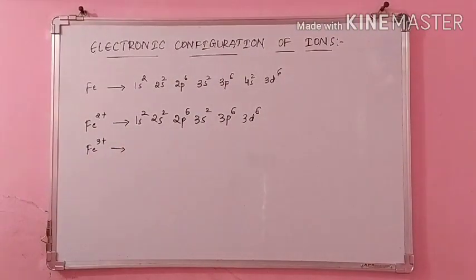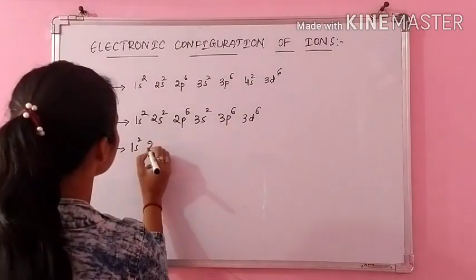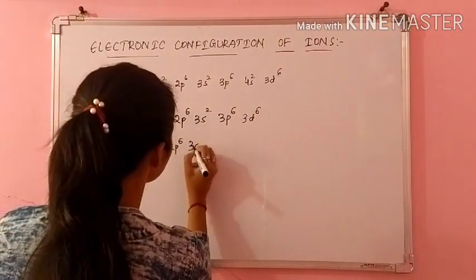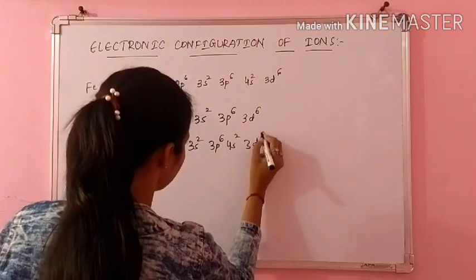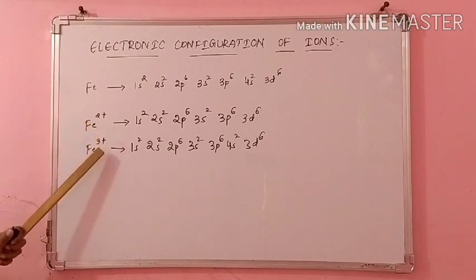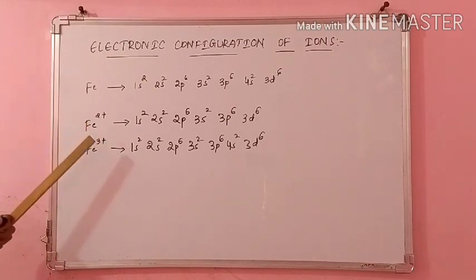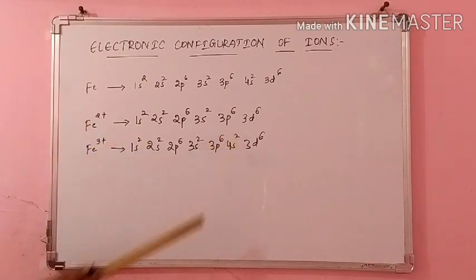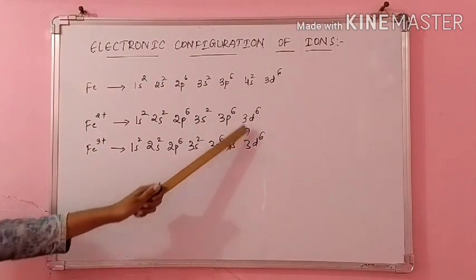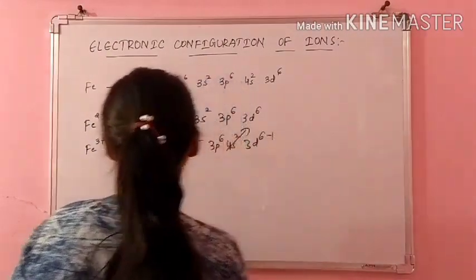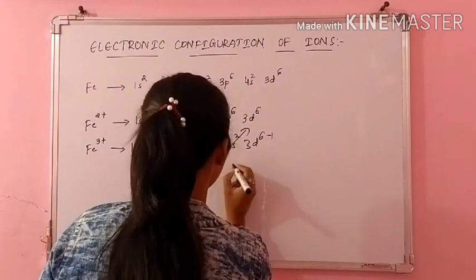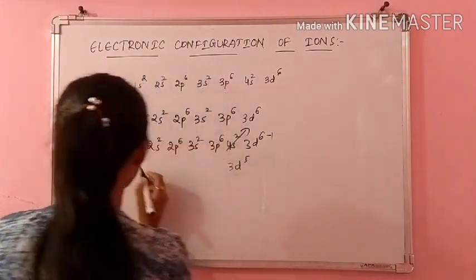Now we will move on to Fe3+. Again, I will write the same configuration: 1S2, 2S2, 2P6, 3S2, 3P6, 4S2, and 3D6. Now we have to subtract 3 electrons. Obviously again we will remove first from 4S because it is higher energy. That removes 2 electrons, and then we have to remove 1 more electron from 3D. So 3D6 minus 1 gives us 3D5.